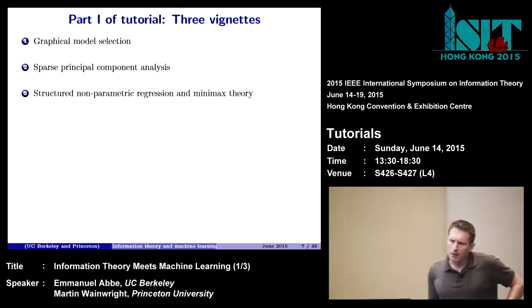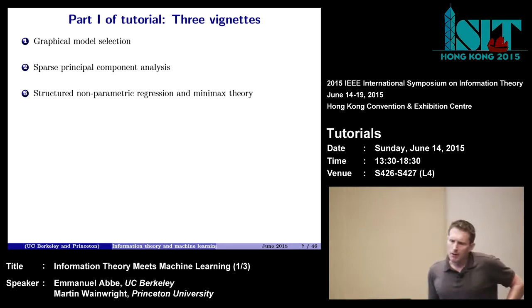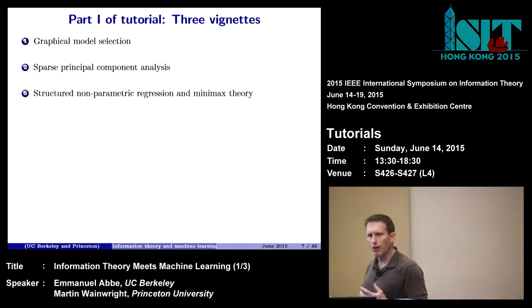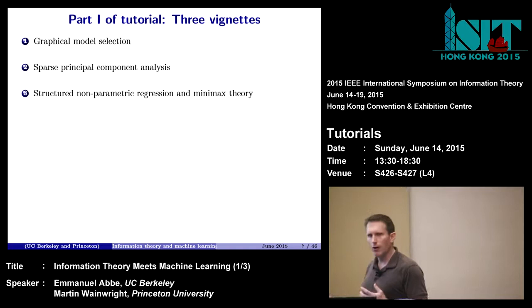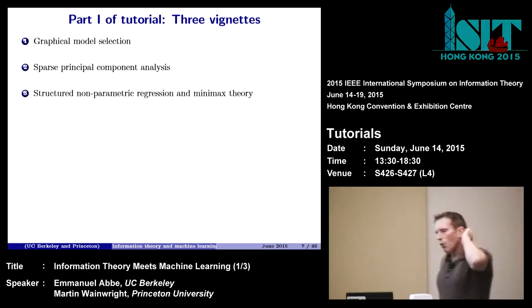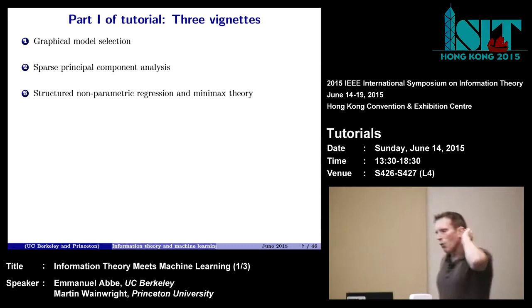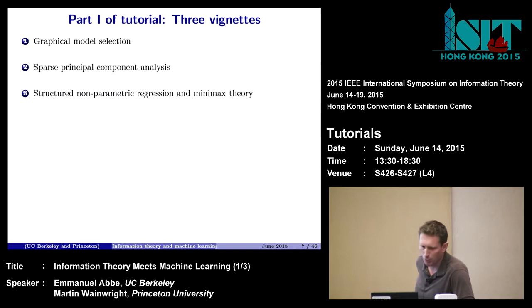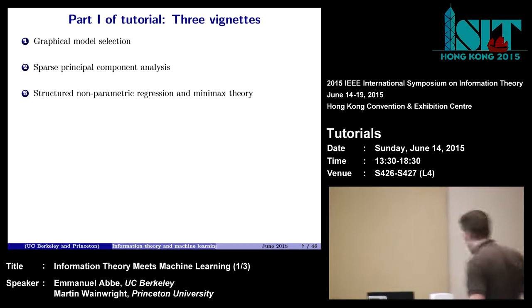What I'd like to do in the remainder of the tutorial is give you three vignettes in which you'll see these themes reoccur — this theme of estimation or learning as a kind of channel coding problem — and see how information-theoretic techniques enter these unorthodox channel coding problems. In the third vignette, we'll see the notion of metric entropy and how, when you connect it with something like Fano's inequality, you get an equation that tells you a fair bit about the optimal rates of estimation for a large class of problems.